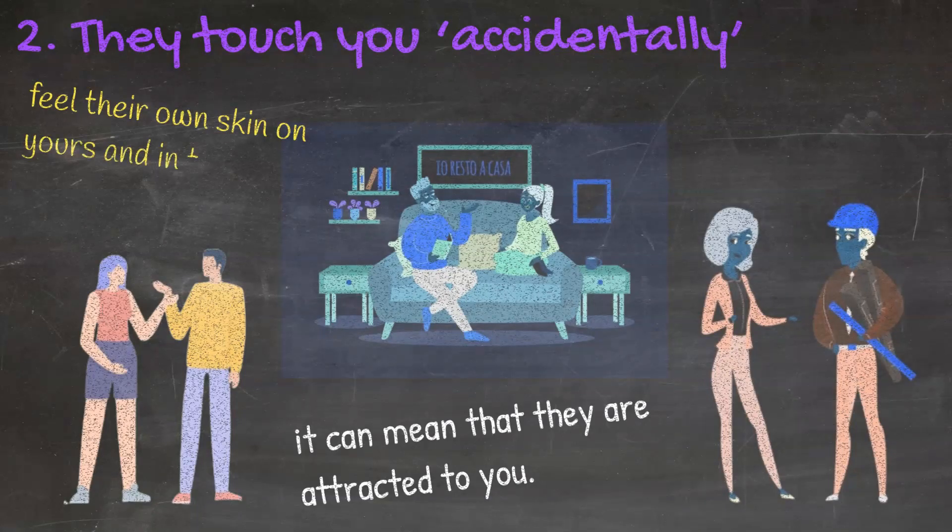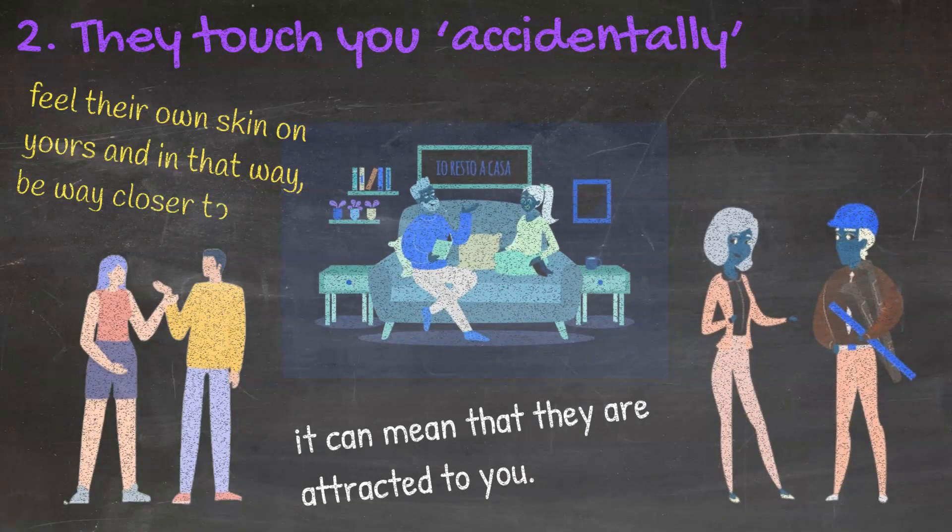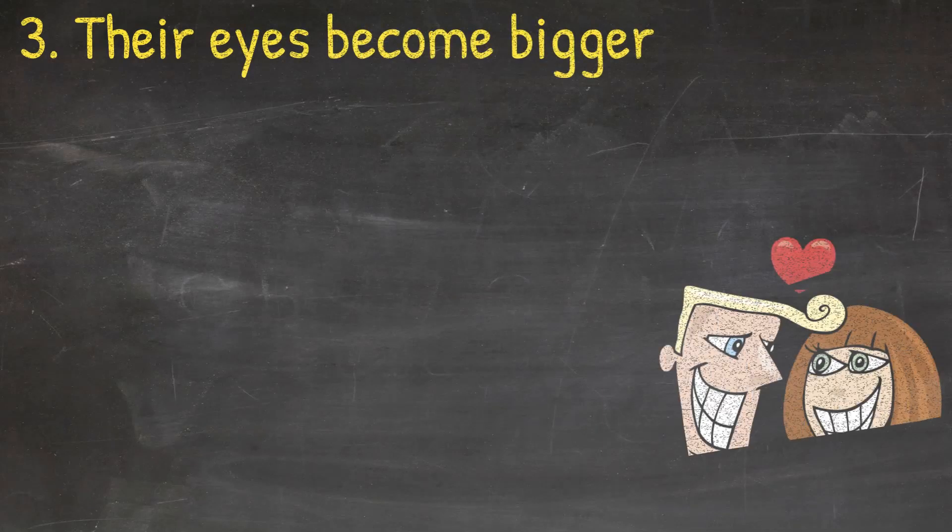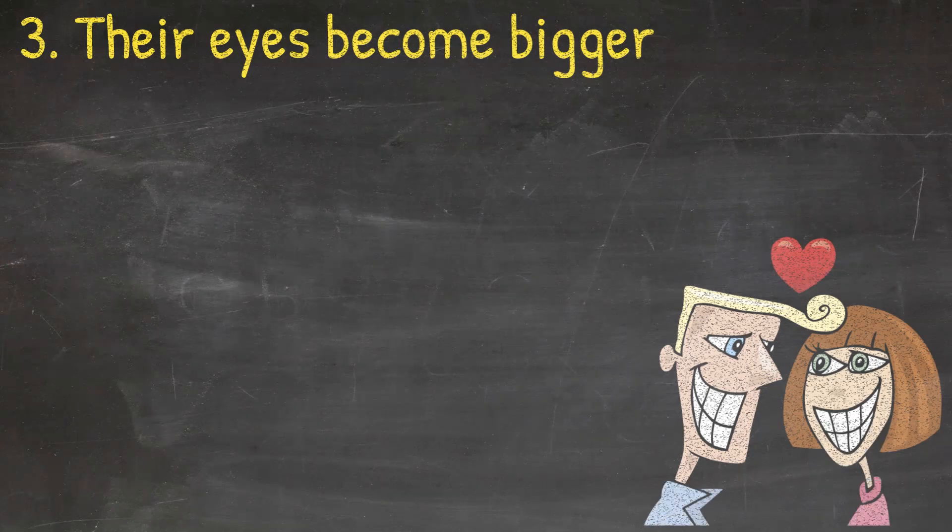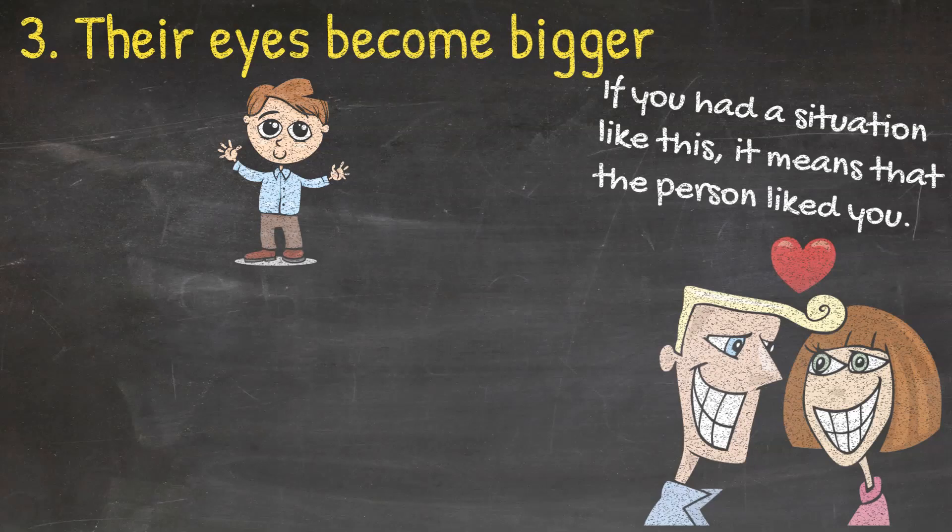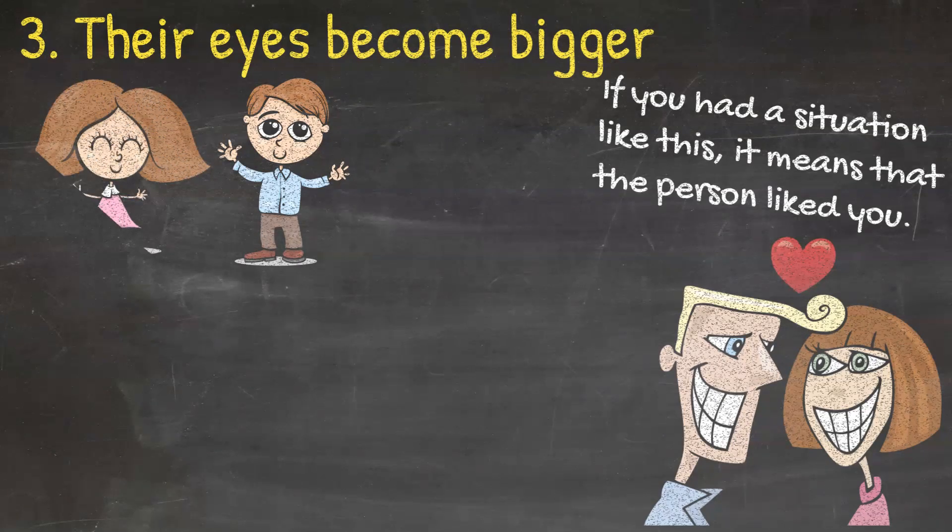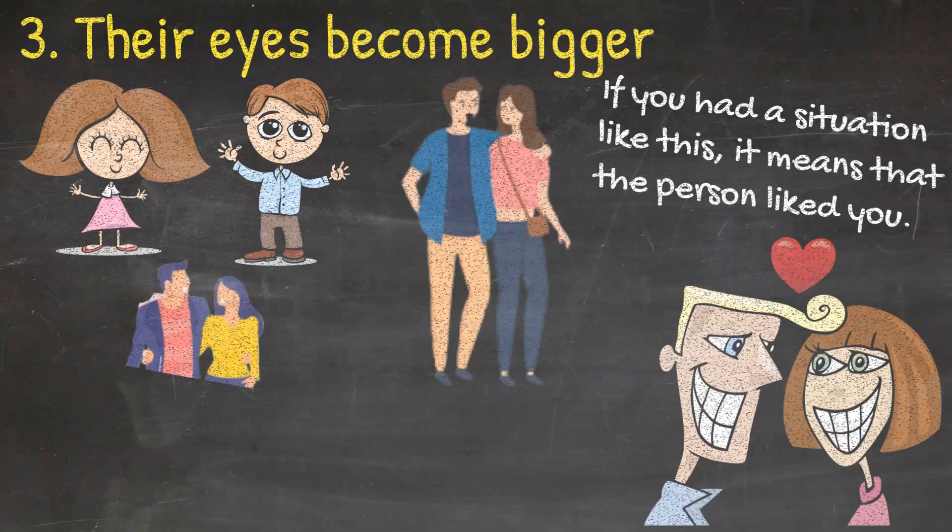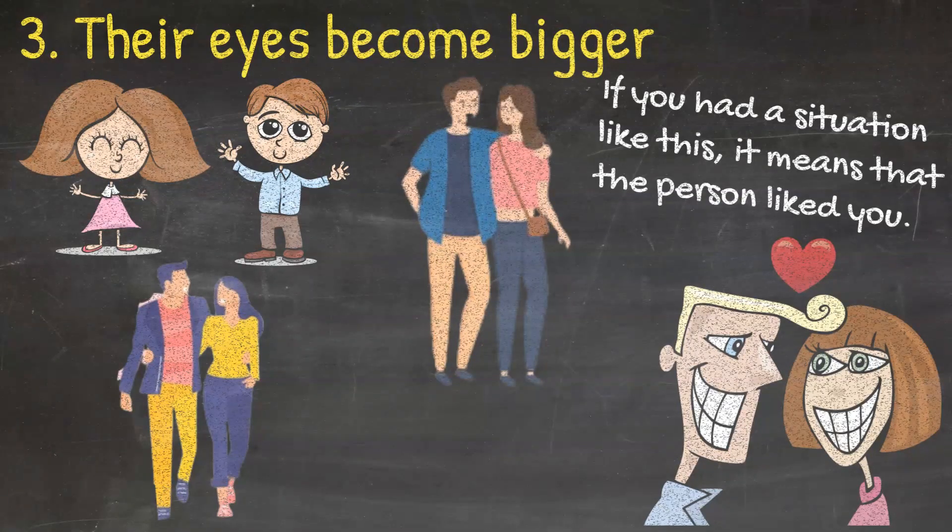Three: Their eyes become bigger. Have you ever met someone and you caught them looking at you with their eyes wide open, like you could see that their pupils got dilated? If you had a situation like this, it means that the person liked you. Psychologists say that when we are attracted to someone, we try to open our eyes more so that we can see things better. That is our way to get to know a person better, and we do that unconsciously. So the next time you see a guy looking at you with his eyes wide open and sometimes his mouth, it is a proven sign that he likes you.